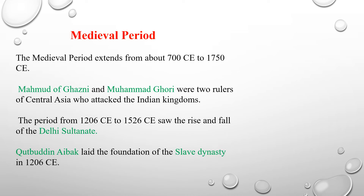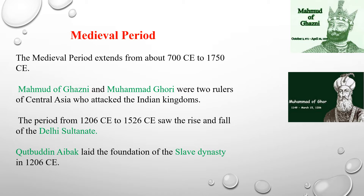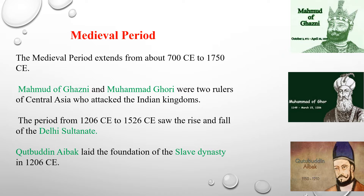Medieval period. The medieval period extends from about 700 CE to 1750 CE. Mohammed of Gajini and Mohammed Gauri were great and powerful rulers of Central Asia who attacked the Indian kingdoms. The period from 1206 CE to 1526 CE saw the rise and fall of the Delhi Sultanate. The Slave dynasty was founded by Qutbudin Iberg in 1206 CE.